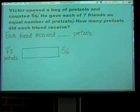And so how do you think we could show that? Seven friends. What do you think? So how many boxes would we have? We would have seven boxes because each box is a group. Each friend is like a group, right? They're going to get a group of pretzels.